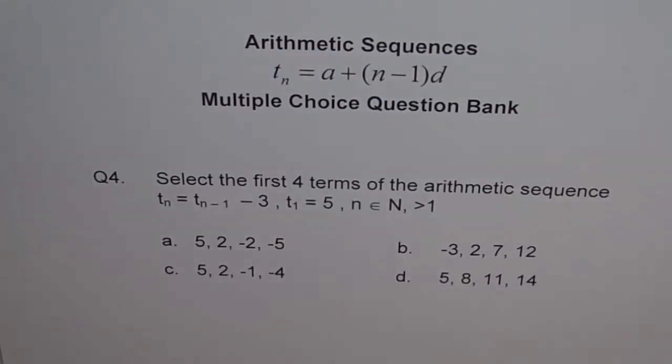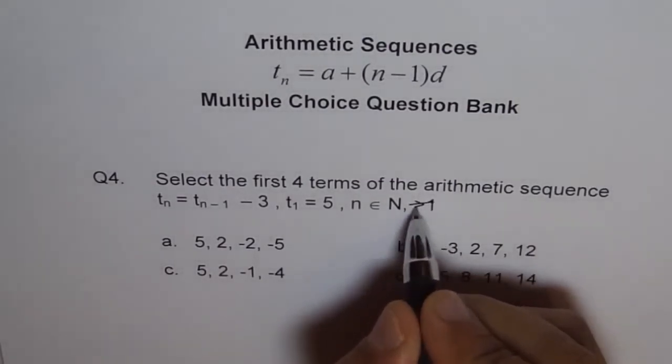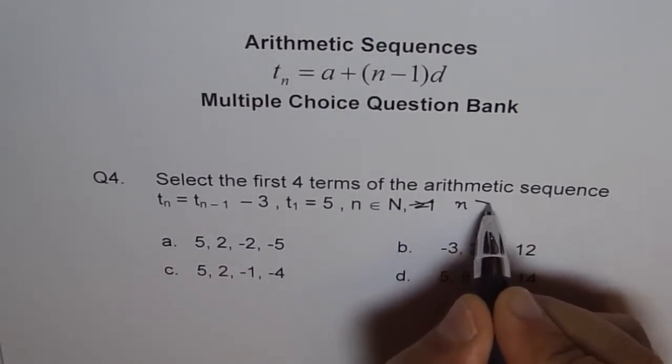Question 4. Select the first 4 terms of the arithmetic sequence Tn equals Tn minus 1 minus 3, T1 equals 5, n belongs to natural numbers and is greater than 1. I should write n is greater than 1. It is missing here. n is greater than 1.